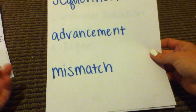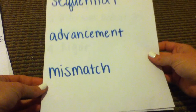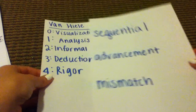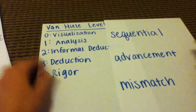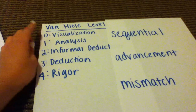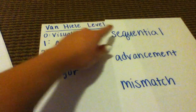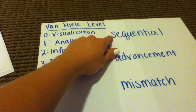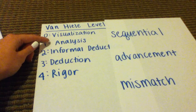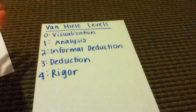The final key property is mismatch, which means a student must master one level before moving to the next. For example, if a student has not mastered level zero visualization, they would not be able to move on to analysis. Because it's sequential, mastering each level enables them to move to the next.